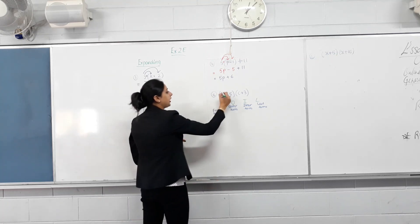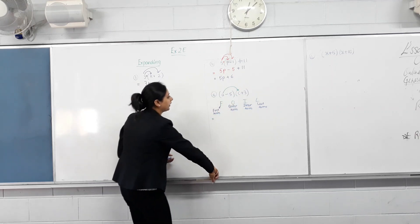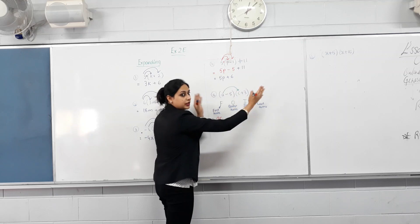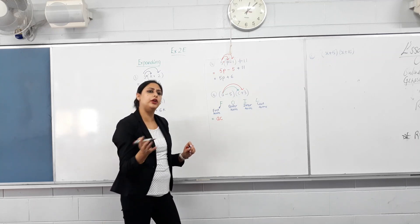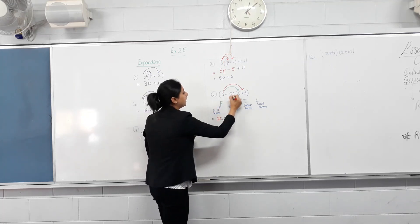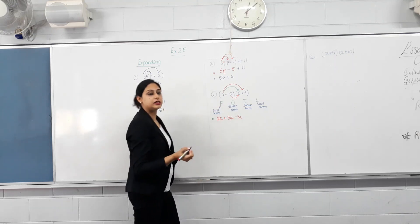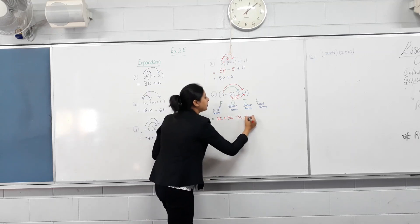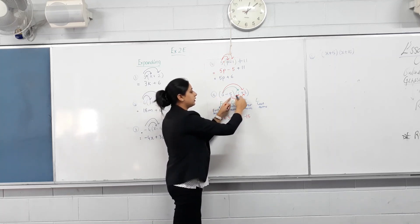First term in the first bracket with the first term in the second bracket. So A times C is AC. Then outer terms — that means A and 3. Can you see the outer terms in both brackets? A times positive 3 is plus 3A. Then inner terms — negative 5 is going to be multiplied. Negative 5 times C. And then last terms — last term in this bracket with last term in the other. Negative 5 times 3? Negative 15. First term, outer terms, inner terms, last terms.